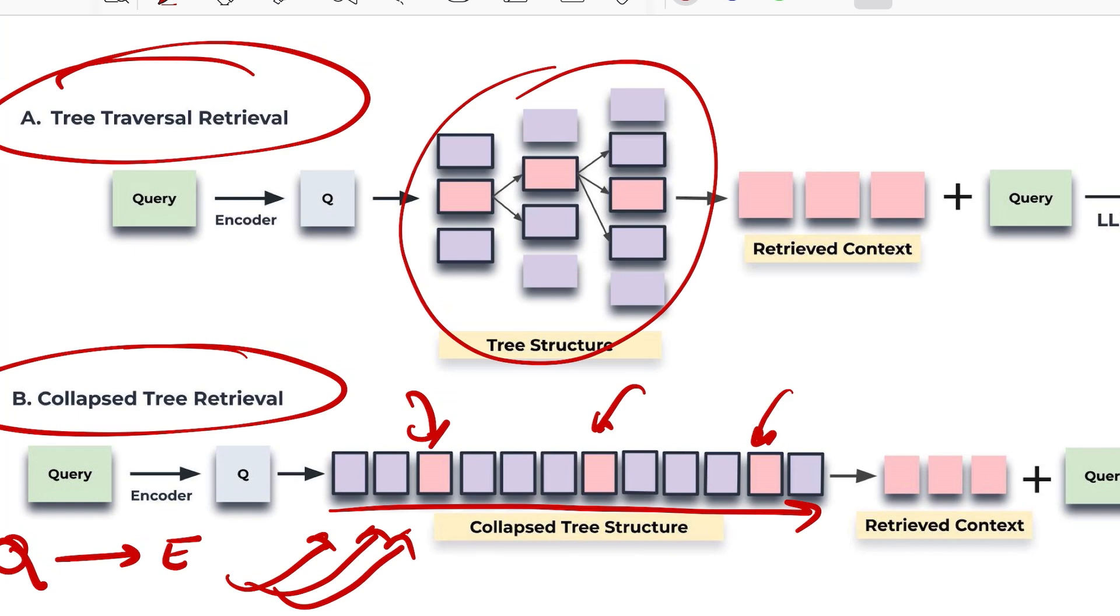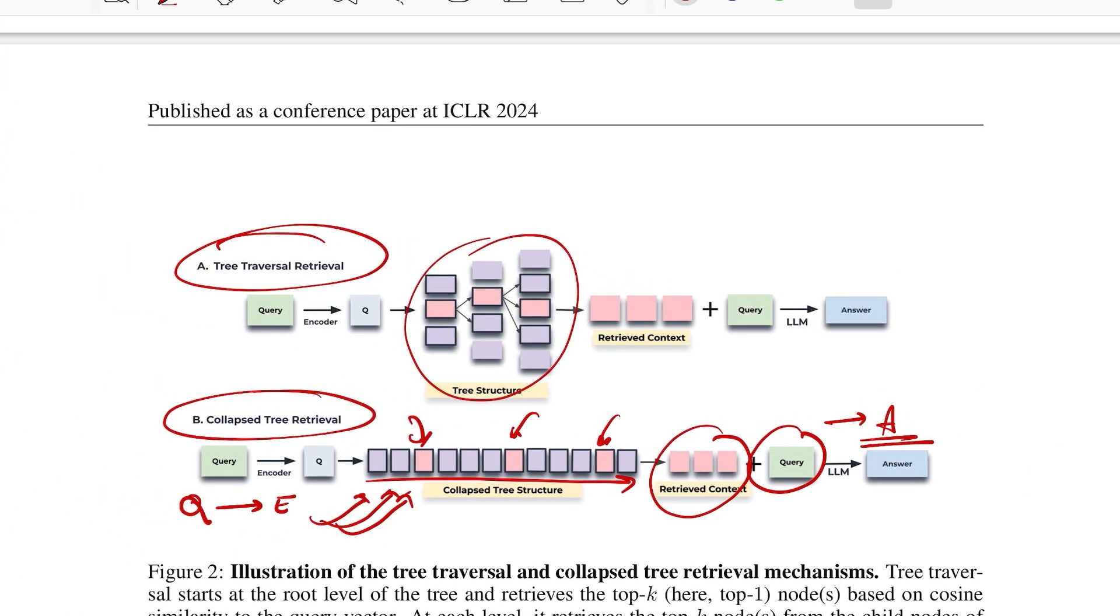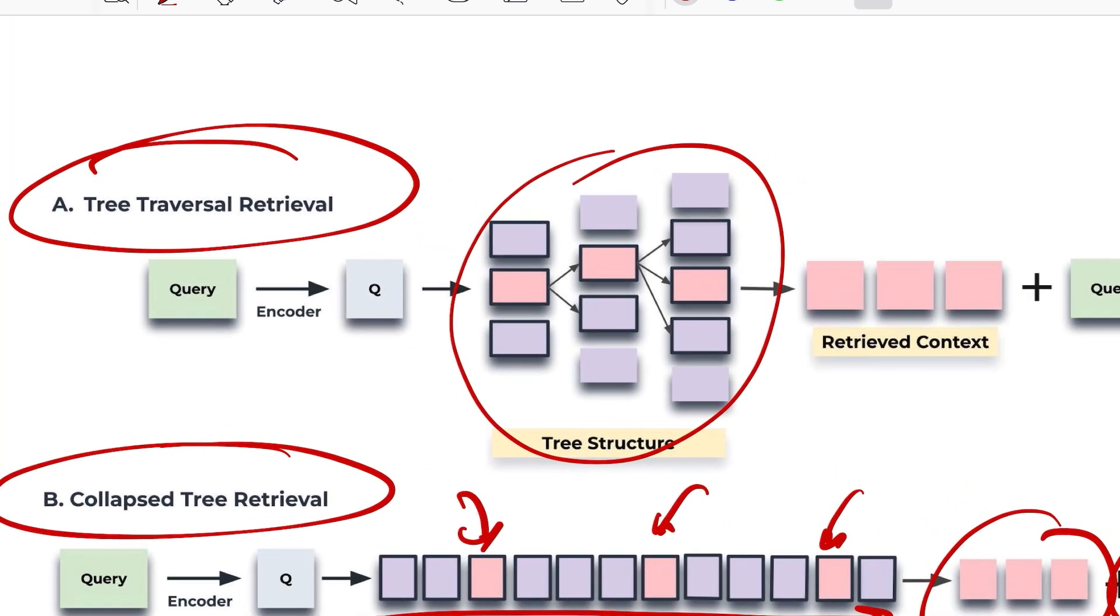And let's say you see okay, this is good, this is good, and this is good and they are above a certain threshold that looks good to me. So you just pick all these three, retrieve context, add a query and pass it to the LLM to get your answer. So that's a simple way of collapsing the entire tree and then performing the retrieval.